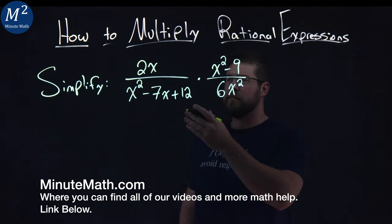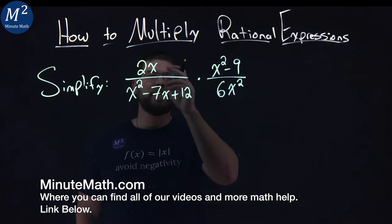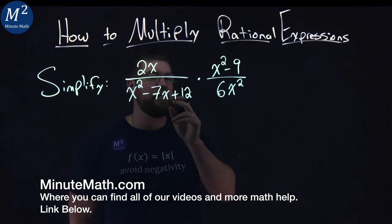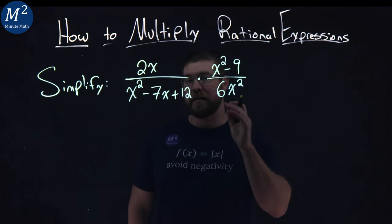We're given this problem here. Simplify, and we have two rational expressions being multiplied. 2x over x squared minus 7x plus 12, and x squared minus 9 over 6x squared.